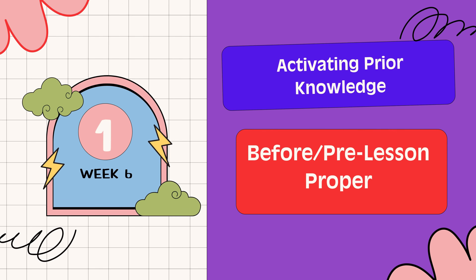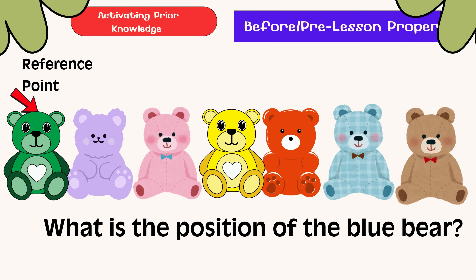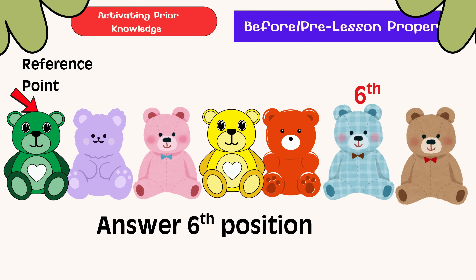Activating Prior Knowledge: Review of Ordinal Numbers. The reference point is the color green bear. Let's answer the following questions. What is the position of the blue bear? The answer is in the 6th position.